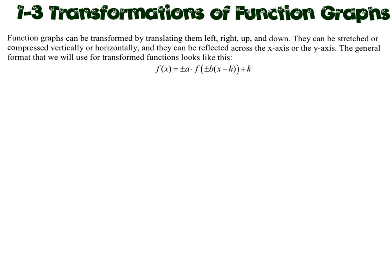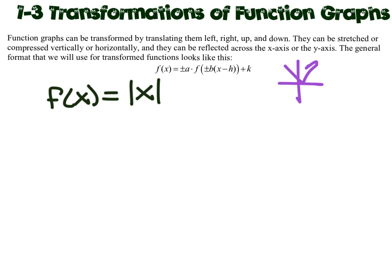So the general format of a function, we use f of x. f of x equals some function. Let's just use the absolute value of x as an example. But it could be any function — x squared or just x or whatever. There are four places where we can put numbers that change what this function does. We all know that the absolute value of x is a v-shape, just a graph with the vertex at 0, 0. But we could put numbers here or here or here or here.